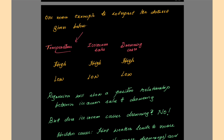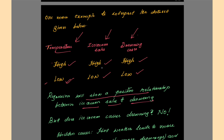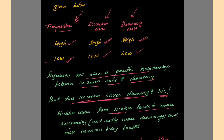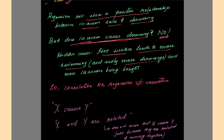Consider three attributes: temperature, ice cream sales and drowning cases. The data shows high temperature paired with high ice cream sales and high drowning cases, and low temperature with low values of both. Regression will show a positive relationship between ice cream sales and drowning, so we might interpret this as ice cream causing drowning — but that is wrong. The hidden cause is temperature: hot weather leads to more people going swimming and sadly more drownings. At the same time, high temperature also increases ice cream sales.